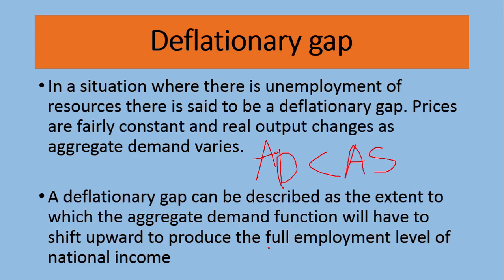This is a situation where the country is not operating at full capacity and is not fully utilizing all resources, because there is less demand in the economy. To address this, the demand curve has to shift upward. The government can push spending, provide more job opportunities, so people have more money and demand more goods and services, causing overall aggregate demand to rise.